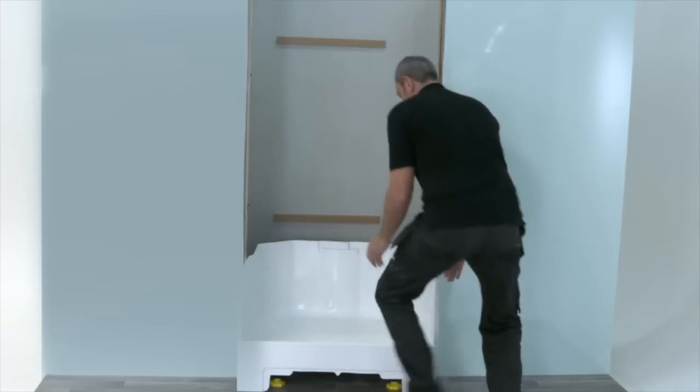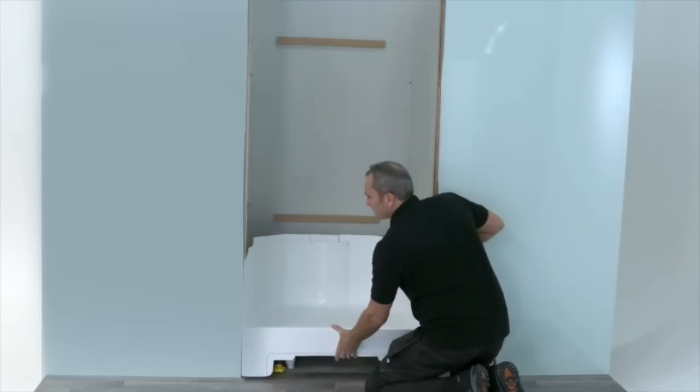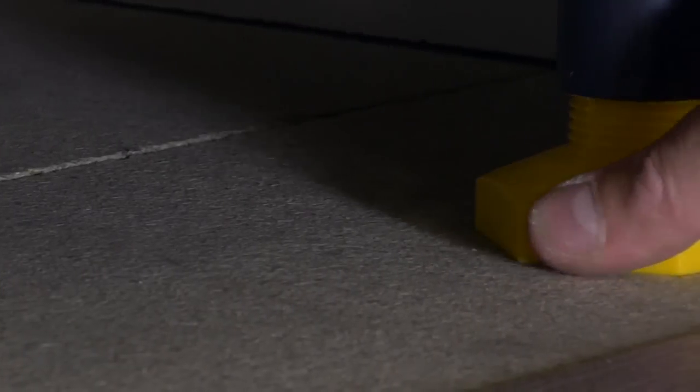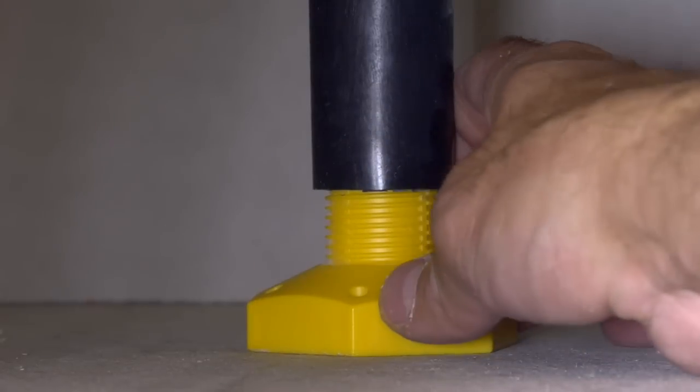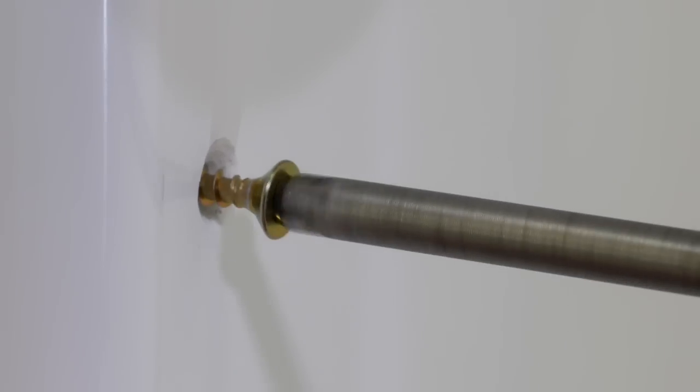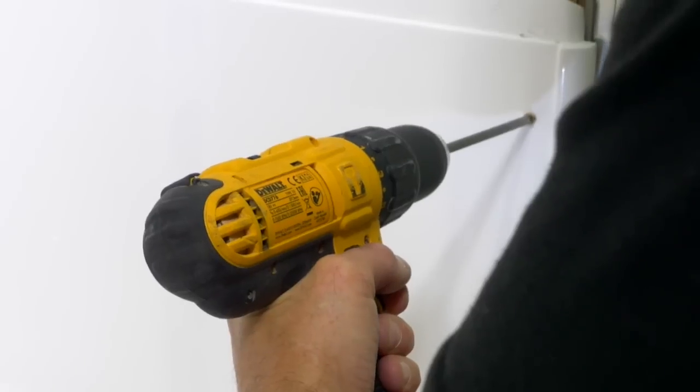Next slide the base unit into the alcove so that the front is aligned with the two marked front lines. The unit must be level so adjust the legs where necessary. If required adjust the rear legs to ensure the front edge of the base is parallel to both marked lines. Screw the base into position by screwing through both front corners.